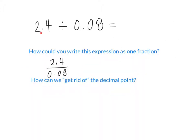Does this expression, 2.4 divided by 0.08, is it equivalent to this fraction right here? Yeah. Now we have to think, how can we quote unquote get rid of the decimal point? In 2.4, how many times would we have to shift the decimal point? One.